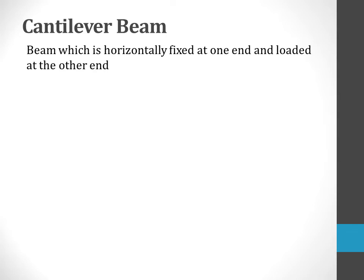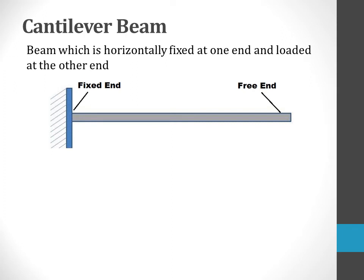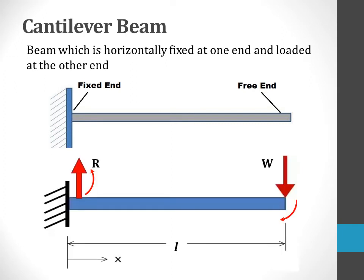A cantilever is a beam fixed horizontally at one end and loaded at the other end. Consider a beam fixed at one end and loaded at its other free end as shown in the diagram. Due to the load applied at the free end, a couple is created between the two forces. The first force is the tensile force due to the load applied acting in the downward direction, and there is a reactive force acting in the upward direction at the fixed supporting end. This external bending couple tends to bend the beam in the clockwise direction, but since one end of the beam is fixed, the beam cannot rotate.